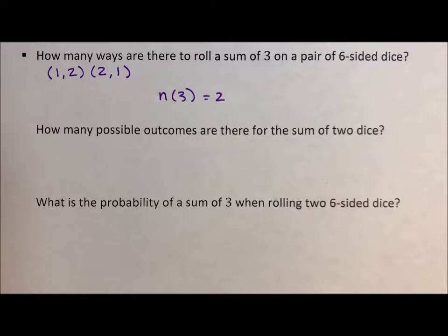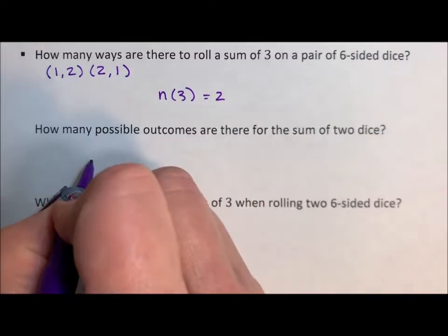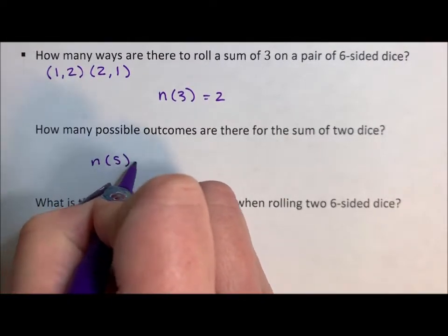How many possible outcomes are there for a sum on two dice? So that's a number in the sample space.